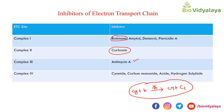Inhibitors of Complex 4 include cyanide, carbon monoxide, azide, and hydrogen sulfide. Cyanide is a respiratory inhibitor that blocks Complex 4 and prevents electron flow from Complex 4 to oxygen. Carbon monoxide, azide, and hydrogen sulfide similarly block electron flow from Complex 4 to oxygen. These are the inhibitors of the electron transport chain — you must remember them, as you may get exam questions based on this concept.